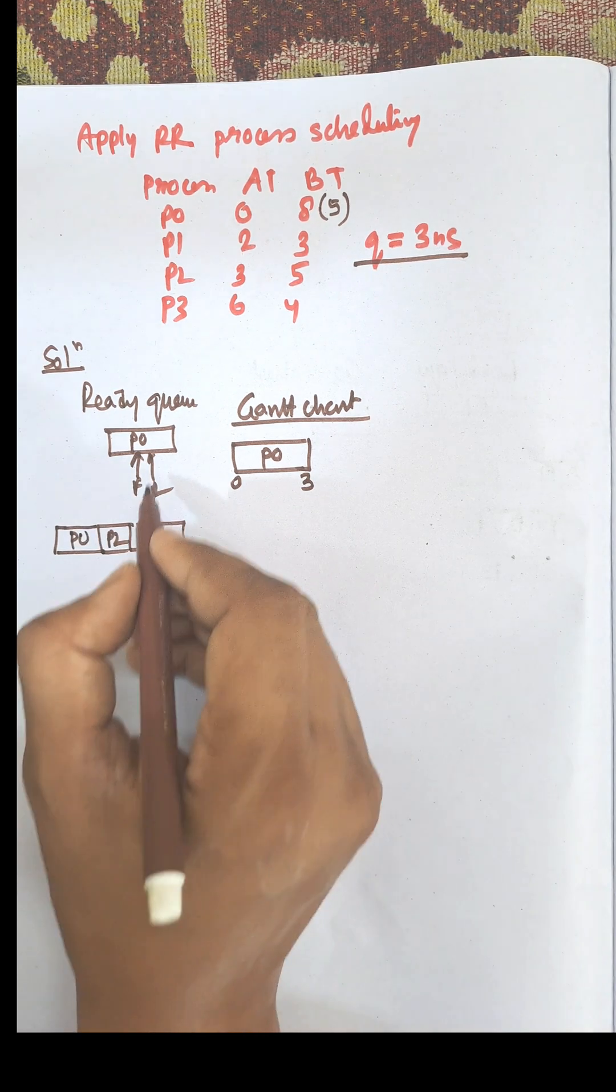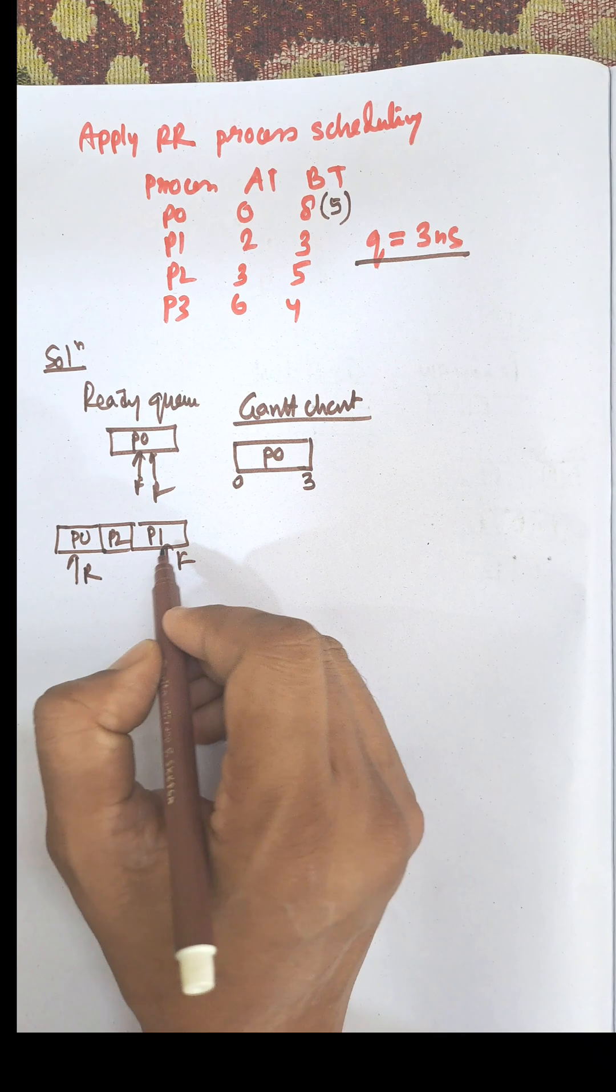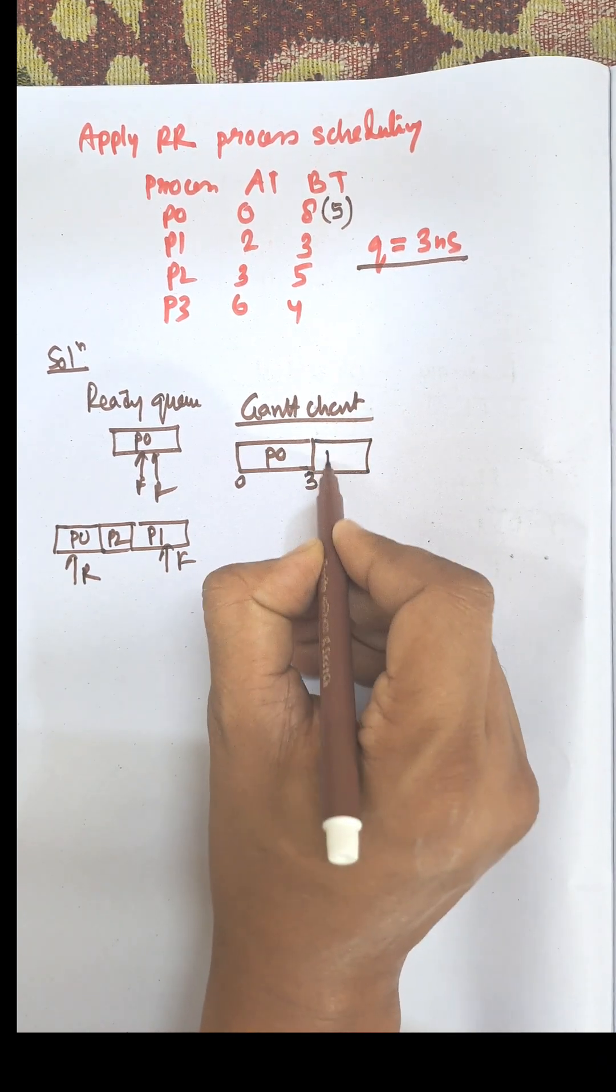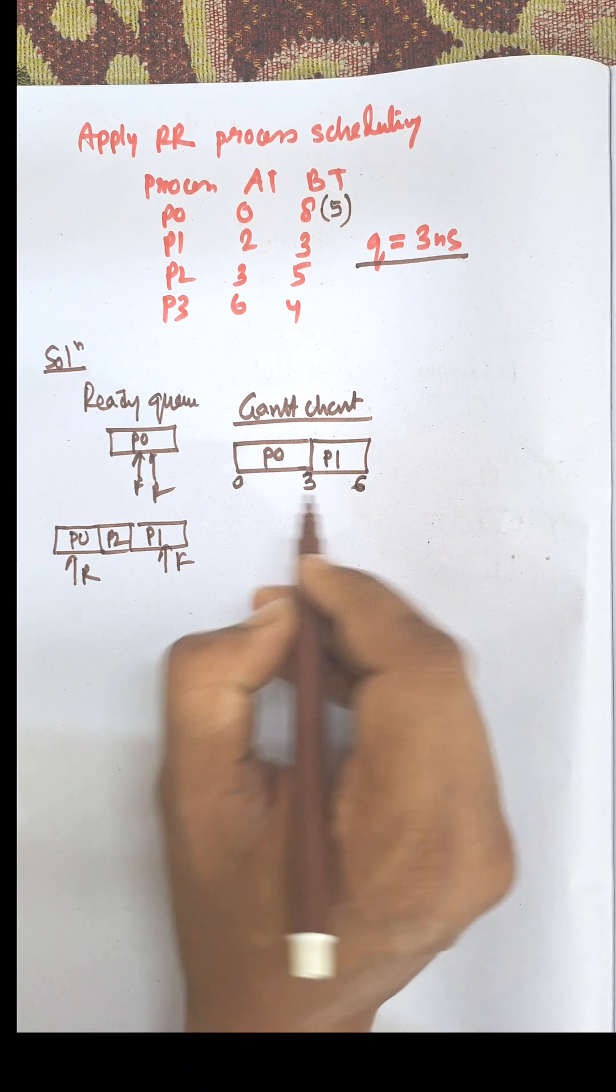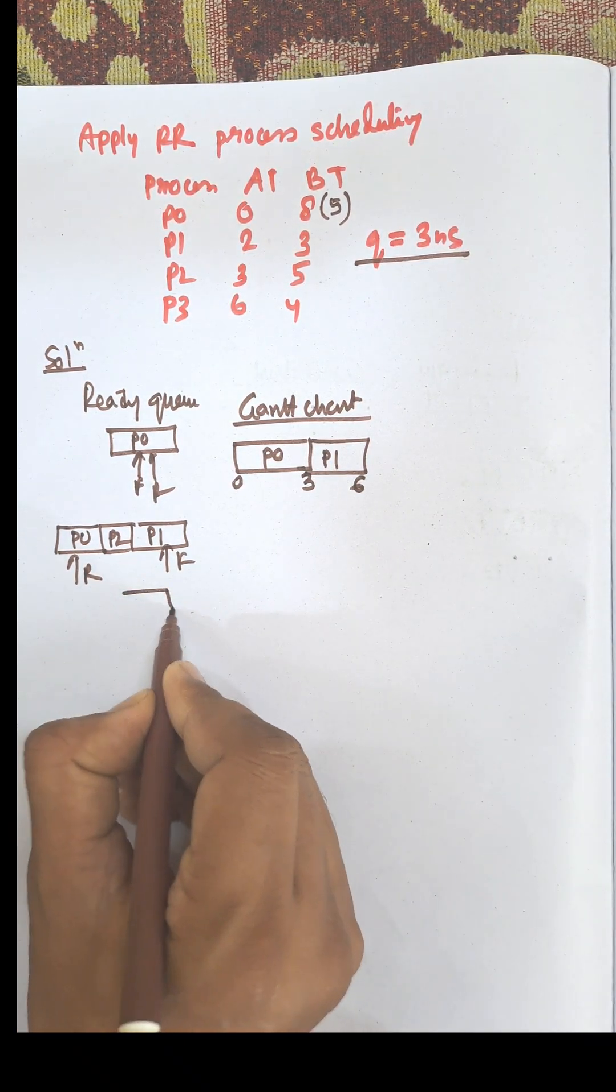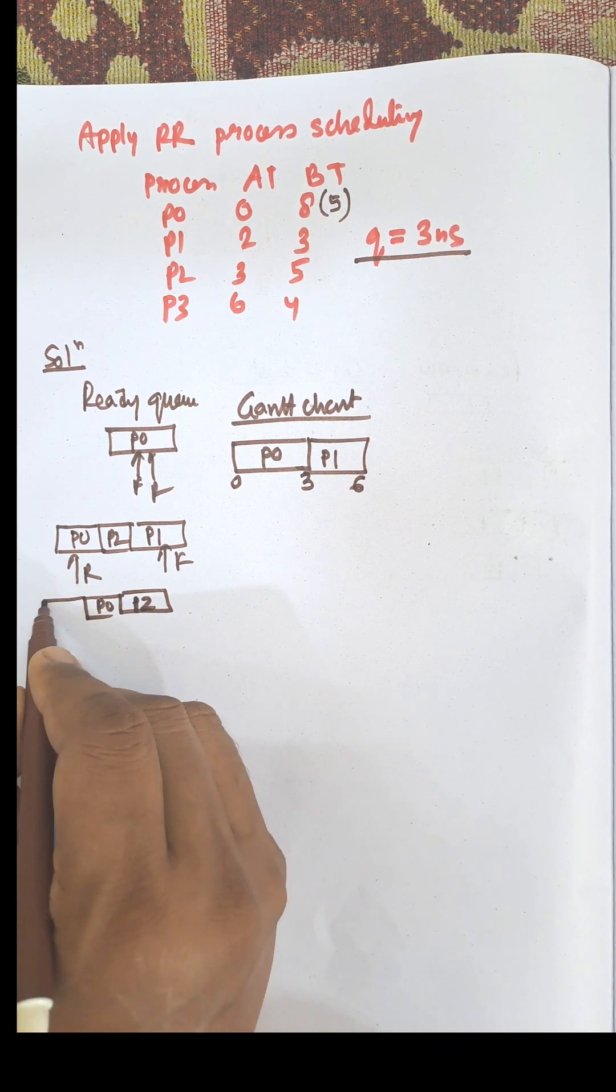P0 moves to the end of the queue. Now this one is front and this one is rear. Next, P1 is selected for execution. P1 is given 3 nanoseconds and it completes. P1 will be terminated, and during this period P3 also arrived. We have P2, P0, and P3.